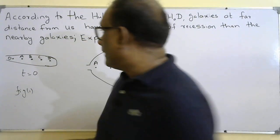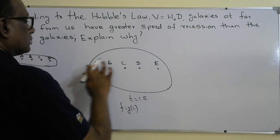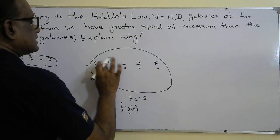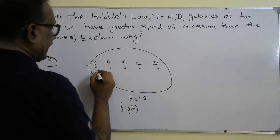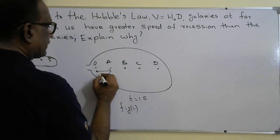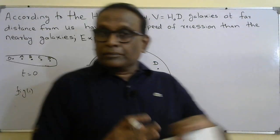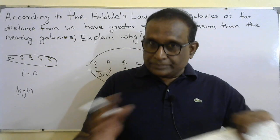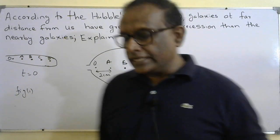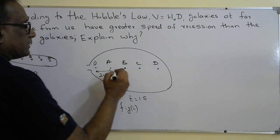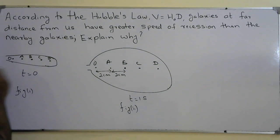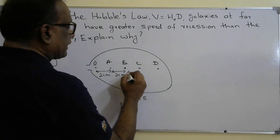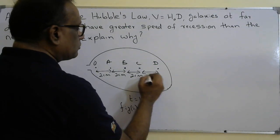After inflation, the distance between any adjacent dots is now two centimeters. The balloon's elastic material expands equally and evenly, so the distance between any adjacent dots becomes two centimeters, compared to one centimeter before.